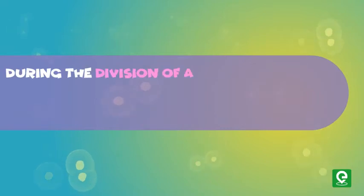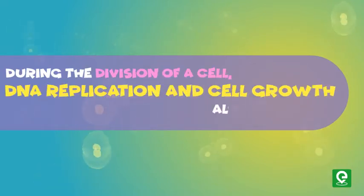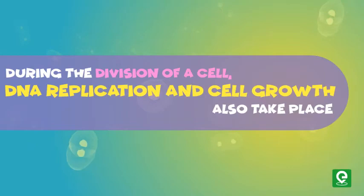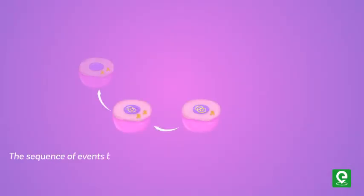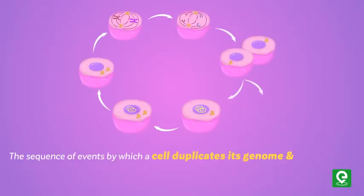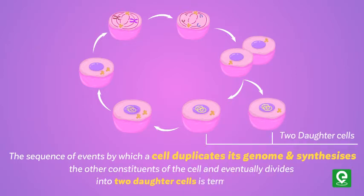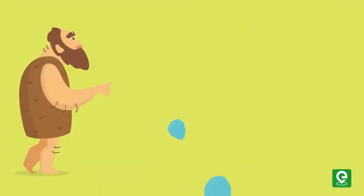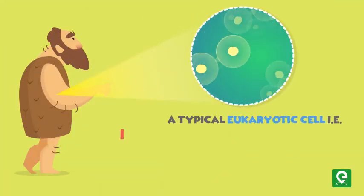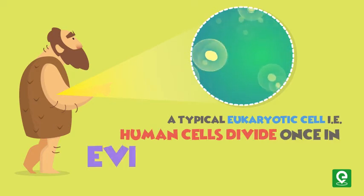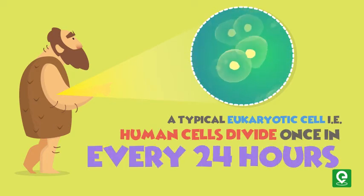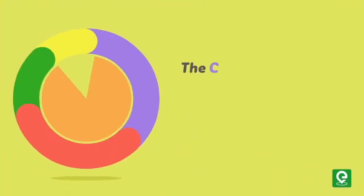The sequence of events by which a cell duplicates its genome and synthesizes the other constituents of the cell and eventually divides into two daughter cells is termed the cell cycle. A typical eukaryotic cell, that is human cells, divides once in approximately every 24 hours.